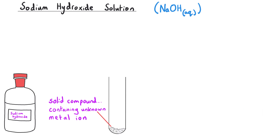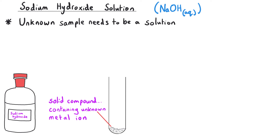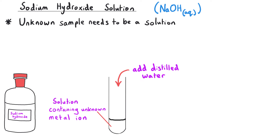One way to test for the presence of positive metal ions, also referred to as cations, is to use sodium hydroxide solution. Sodium hydroxide has the formula NaOH and it's a solution dissolved in water, so we give it the state symbol AQ. This test only works on a solution, so if you've been given a solid sample, the first step will always be to dissolve that sample in distilled water in a test tube to give us a solution.